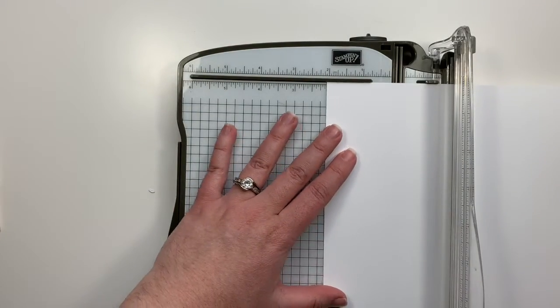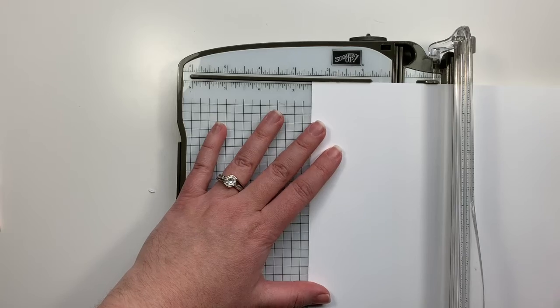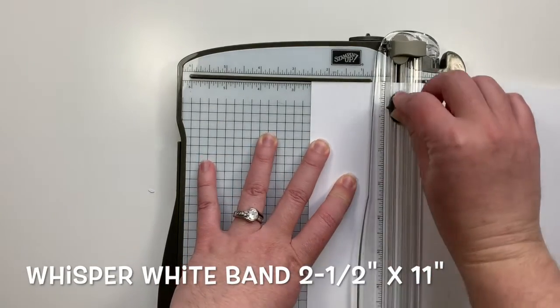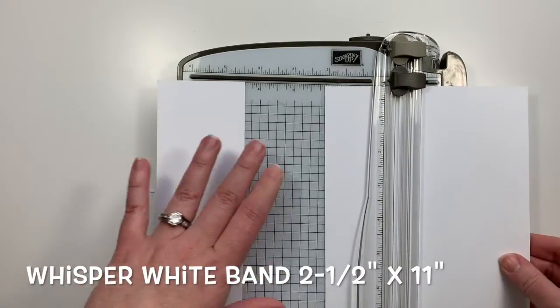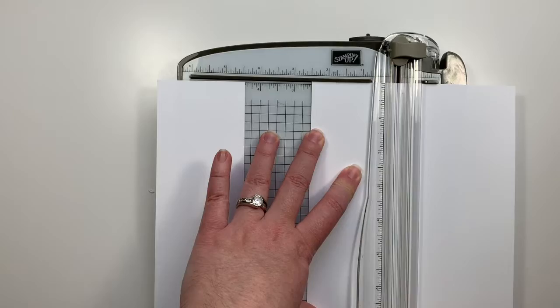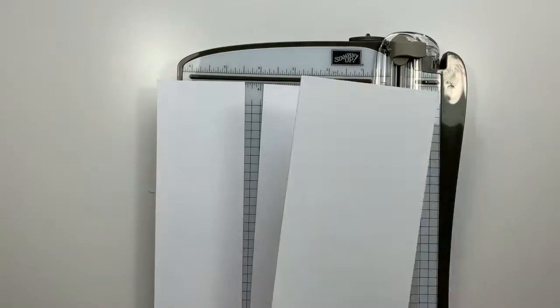And now to cut our Whisper White piece we're going to cut two long strips at 2½ inches, so that's 2½ by 11 inches. So I'm going to cut two of those and that will give me enough cardstock left over to stamp and cut out my images for two cards.